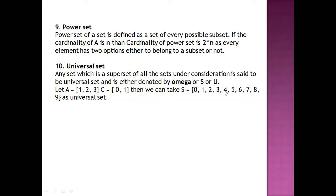A is also included in S and C is also included in S, so we can say S is the universal set for A and C. Hope you are clear. Any set which is a superset of all the sets under consideration is said to be a universal set, denoted by omega, S, or U.